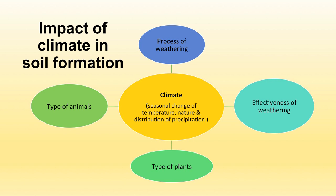Climate affects soil formation through its seasonal change of temperature and the nature and distribution of precipitation. These influence the process of weathering and the effectiveness of weathering, which in turn determines the type of plants and animals found in that area. All these together have an effect on the formation of soil.